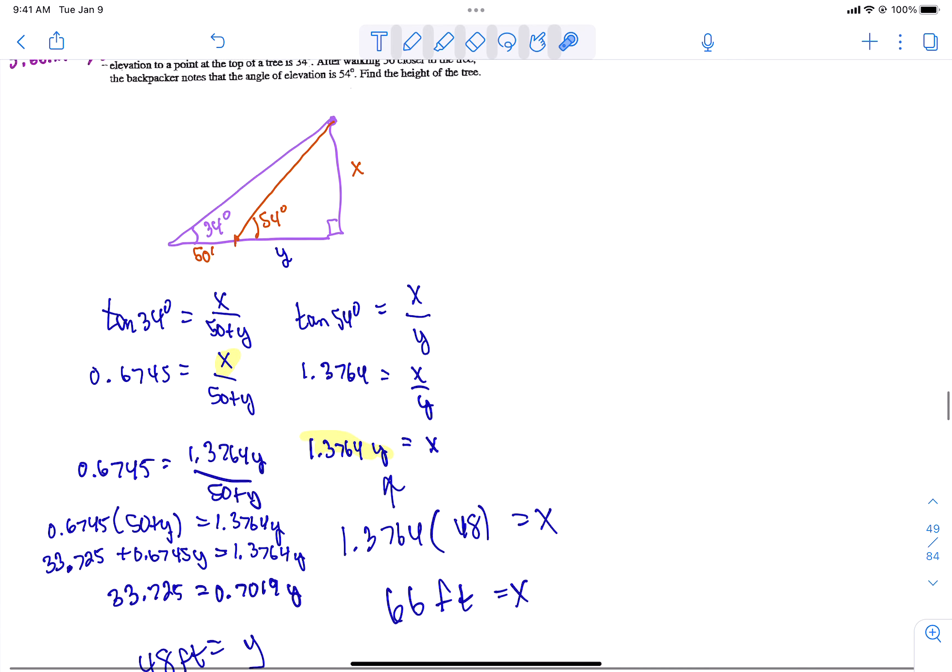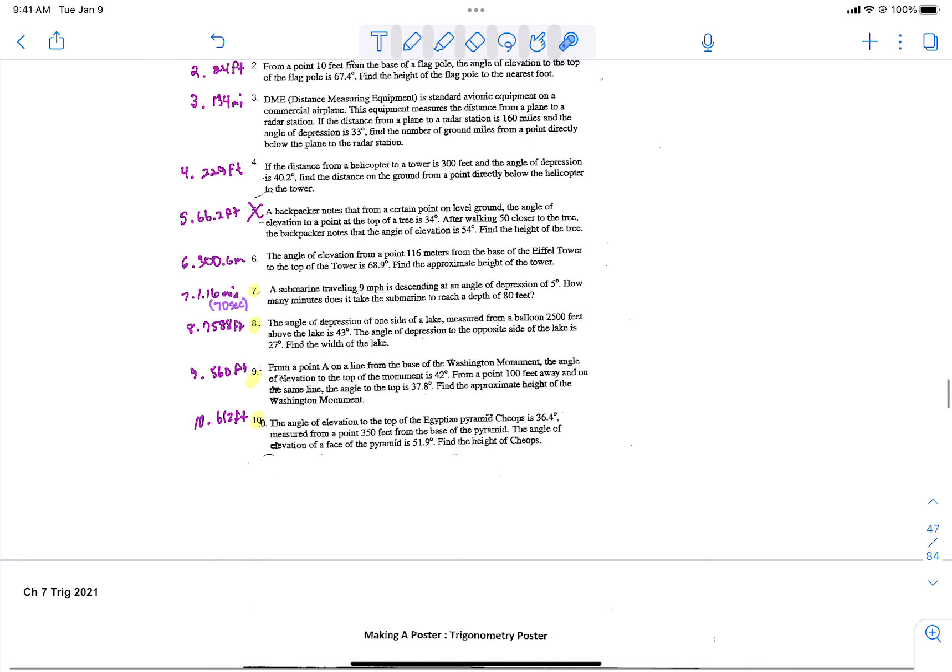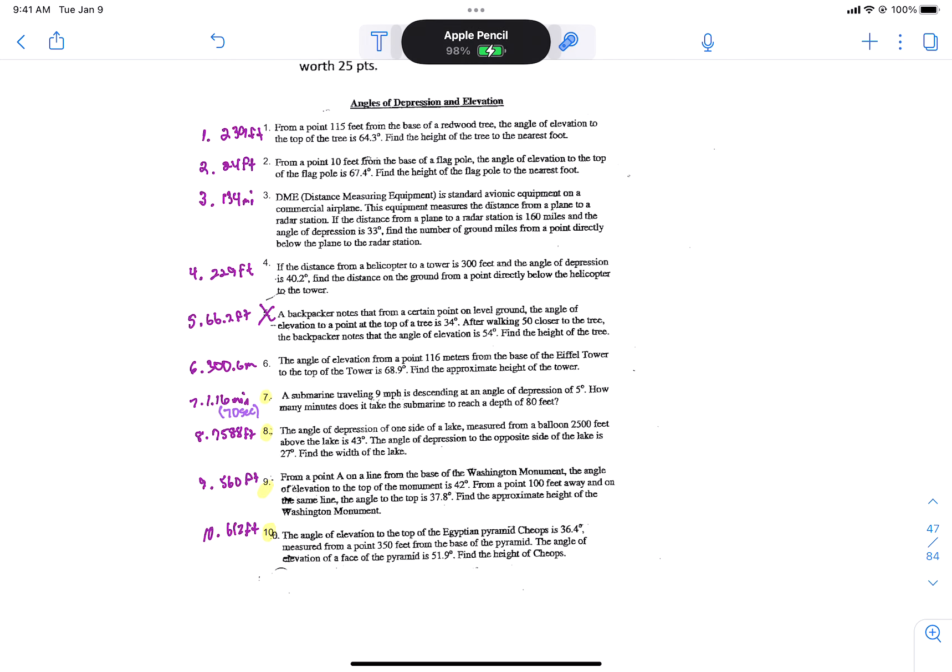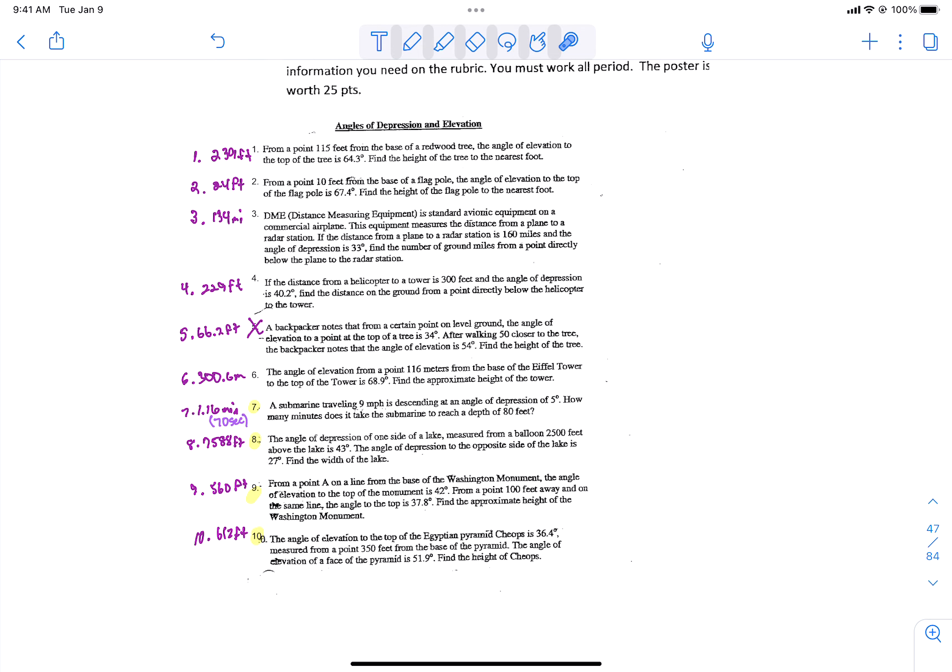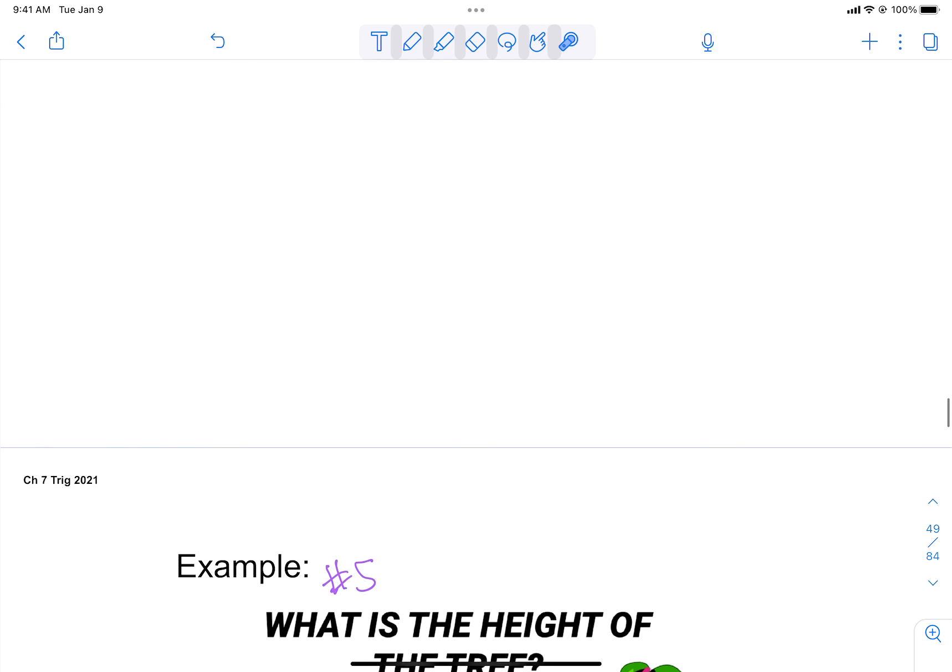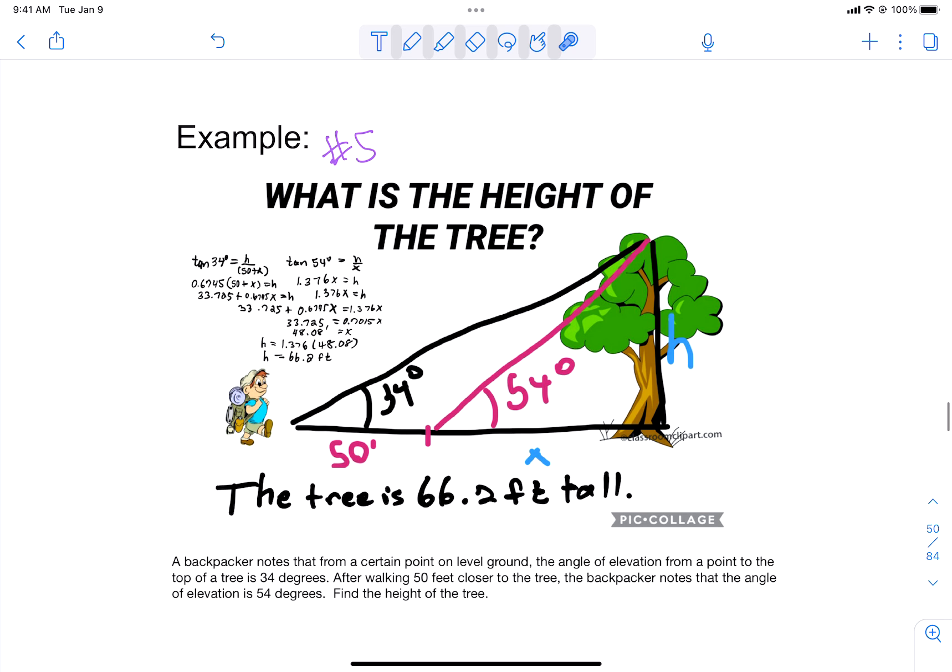Remember, if you do problems 7, 8, 9, or 10 on your poster, because those are more difficult, and you get it right, you will get some bonus points. So you have the rest of the class to work on these. You have the answers. You must show me work. The 10 problems are due tonight by midnight. The poster, you'll have time to work on it in class tomorrow, is due tomorrow by midnight. So there you go. I'll see you next time.